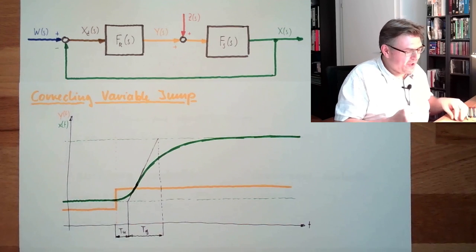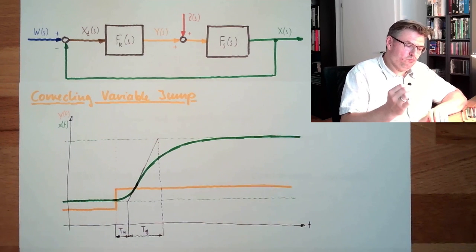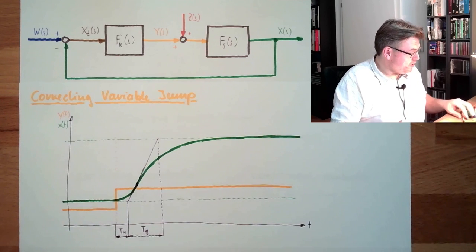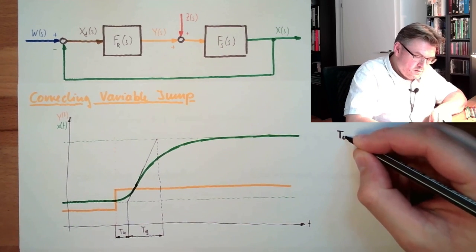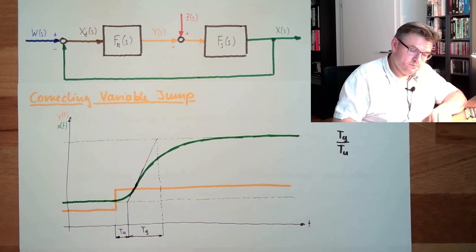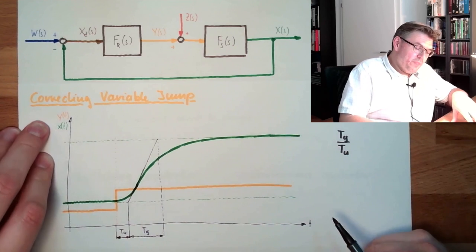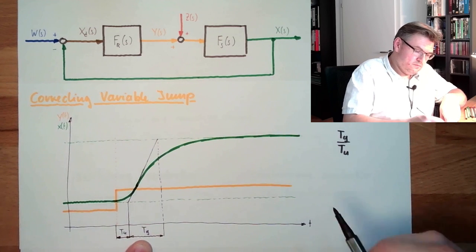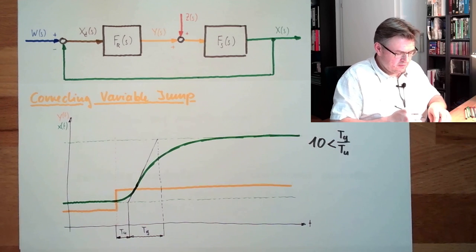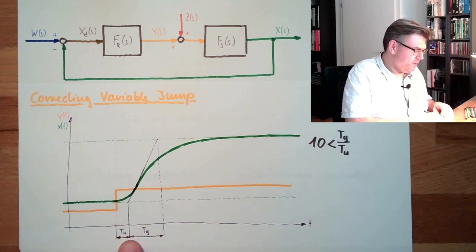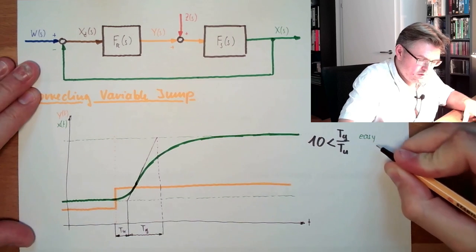What do those times tell us? They tell us a little bit about how tricky this system is to control. I'm looking at the ratio between Tg and Tu — how much bigger Tg is than Tu. If Tg divided by Tu is bigger than 10, this means it's easy controllable. If Tg is 10 times longer than Tu or more, this is easy controllable.